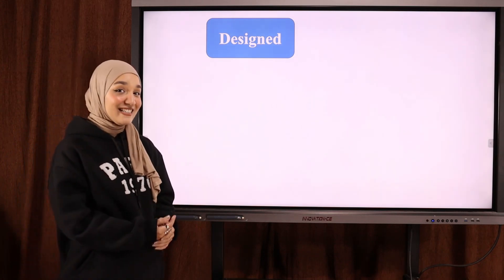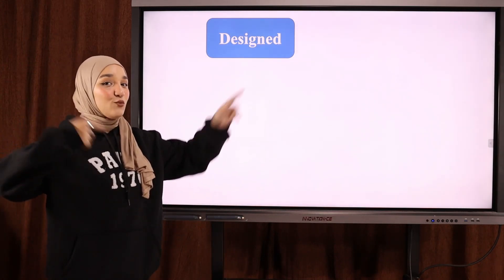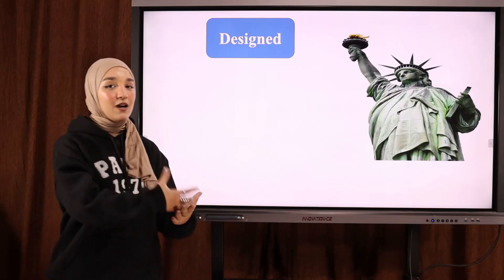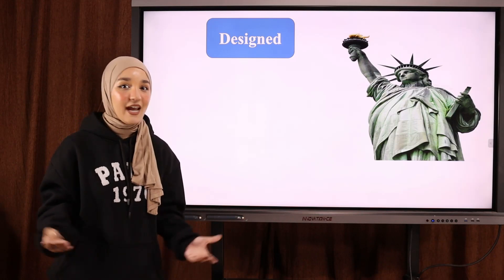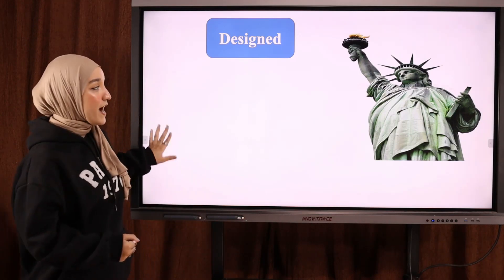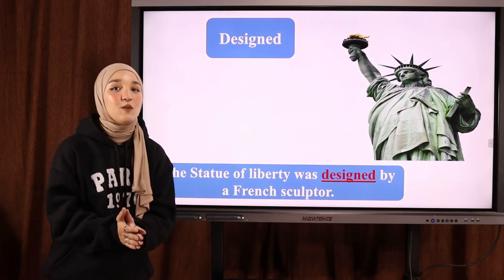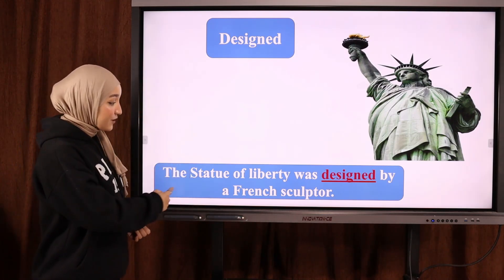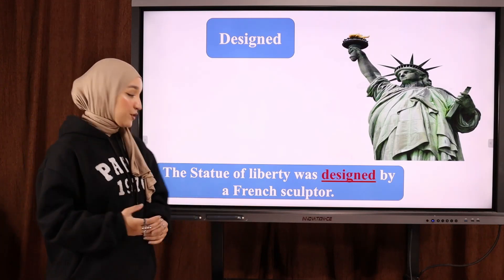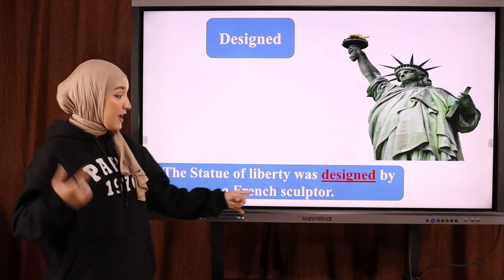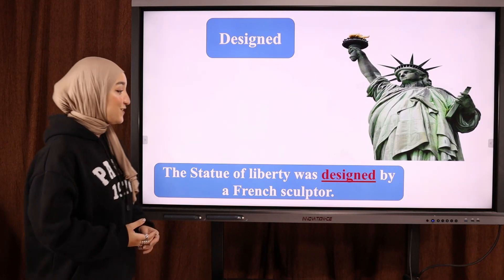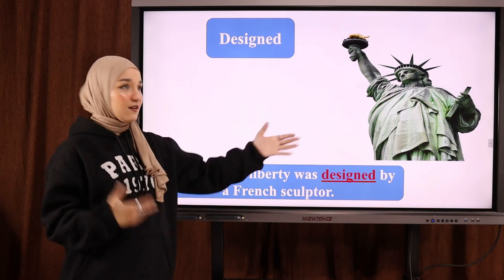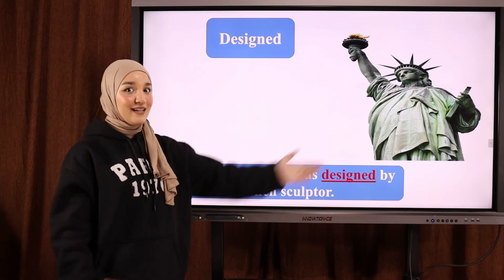The next word is 'designed' — note the Z sound: designed. Designed means صمّم — the design of something (تصميم أي شيء). Example: 'The Statue of Liberty was designed by a French sculptor' — صُمِّمت تمثال الحرية من طرف نحّات فرنسي. So designed means to draw a plan or create a design — تصميم.